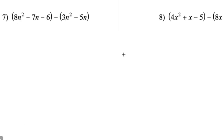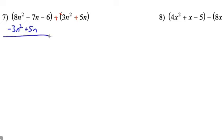There are a couple more to try. We're subtracting two polynomials — let's add the opposite of every term inside the binomial, line up our like terms, and add. The difference is 5n squared minus 2n minus 6.